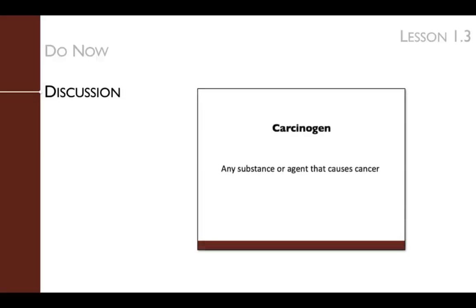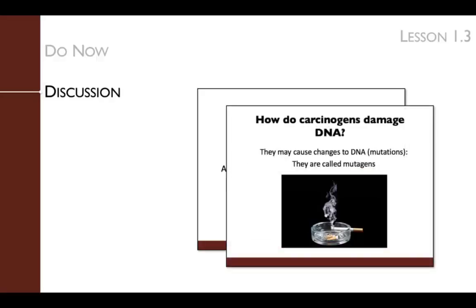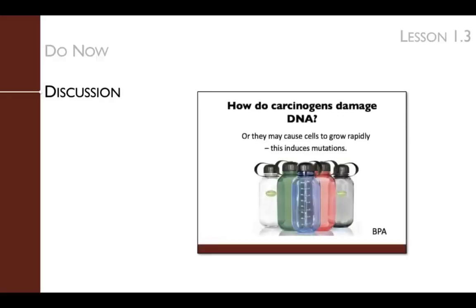This leads us to a discussion of what carcinogens are and how carcinogens actually cause mutations. Next, we classify carcinogens into two groups: carcinogens that directly cause mutations, which are called mutagens, and carcinogens that indirectly cause mutations by increasing cell division and thereby increasing the odds for mutations.